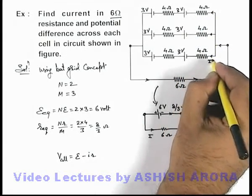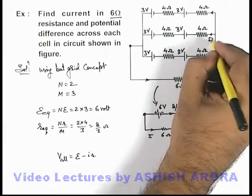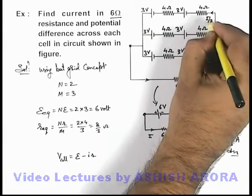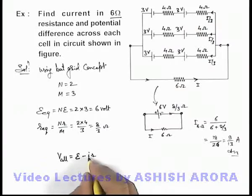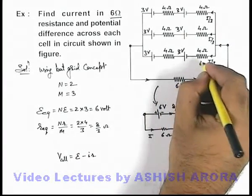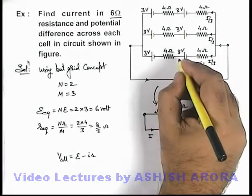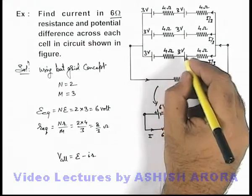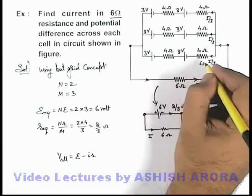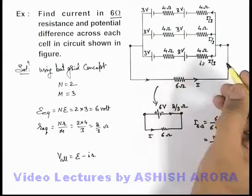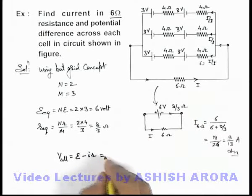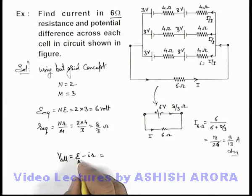In this situation we can say that this current will be divided in 3 branches equally, so this can be written as I by 3, I by 3, and I by 3 through each branch. So small I I am taking as the current in any branch of the circuit, then it can be taken as the current supplied by each cell.